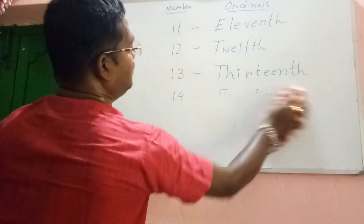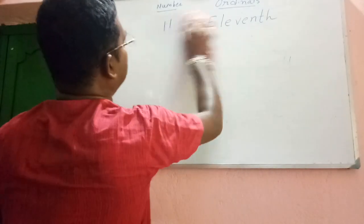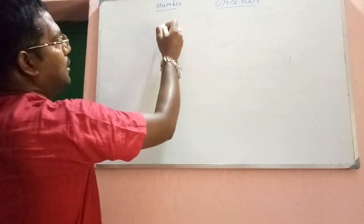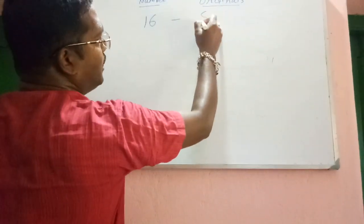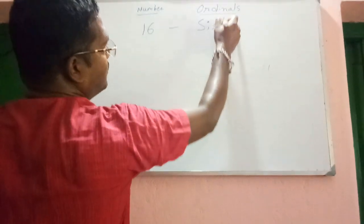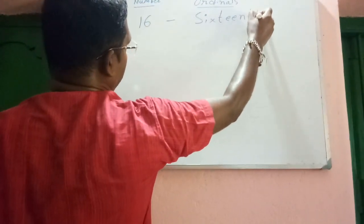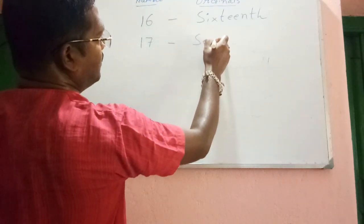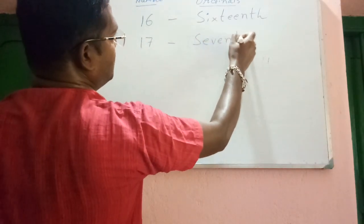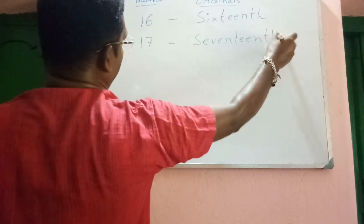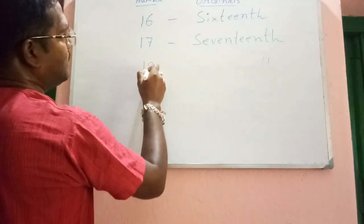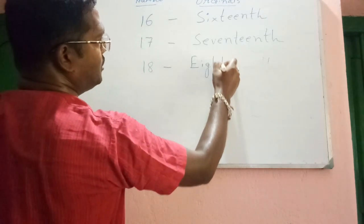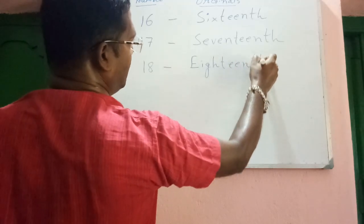Okay, I am just carrying on up to twenty. Number is sixteen and ordinal will be sixteenth — S-I-X-T-E-E-N-T-H. Next, number is seventeen and ordinal will be seventeenth — S-E-V-E-N-T-E-E-N-T-H. Next, number is eighteen and ordinal will be eighteenth — E-I-G-H-T-E-E-N-T-H.